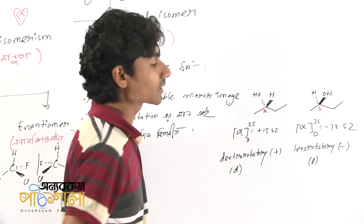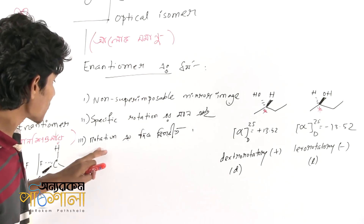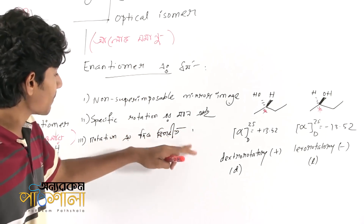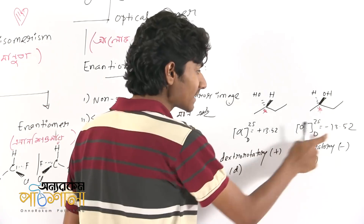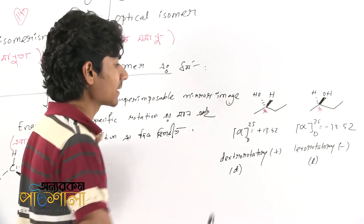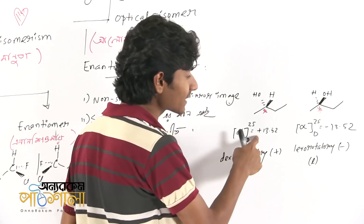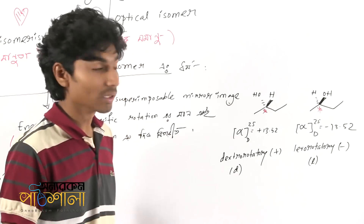D has a D line and doesn't rotate like 15 degrees. Dextro rotation is the opposite direction. Rotation is at a different place because the direction is the opposite. We want to rotate in the plus direction, but we have to rotate in the minus direction.